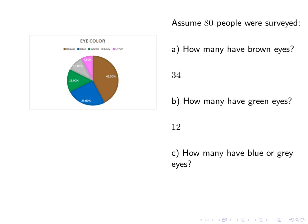And then lastly, how many have blue or gray eyes? So I can either find how many have blue eyes and how many have gray eyes and then add them together. Or I can find the percentage of people that have blue or gray eyes and then change it. So for blue, we have 25%. For gray, we have 10%. So together, that's 35%. So what's 35% of 80? And we should be getting 28.